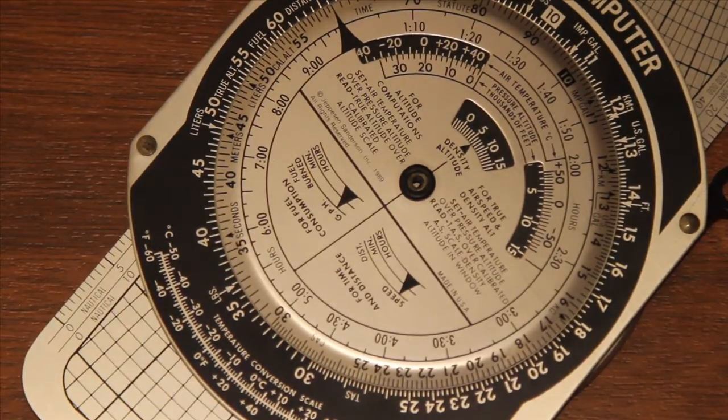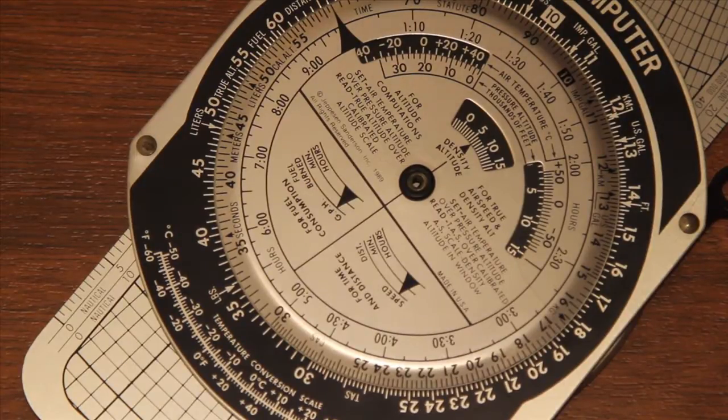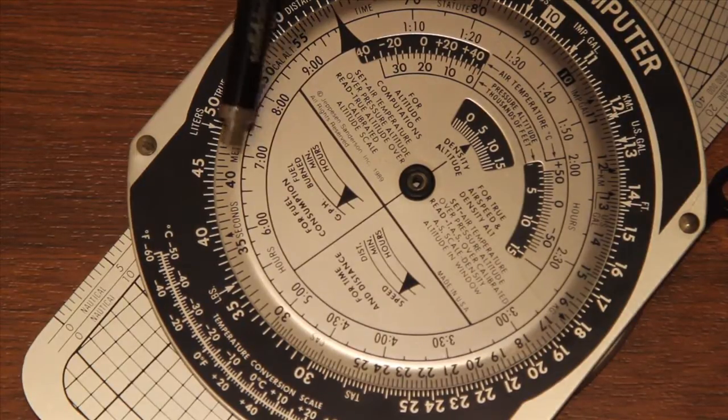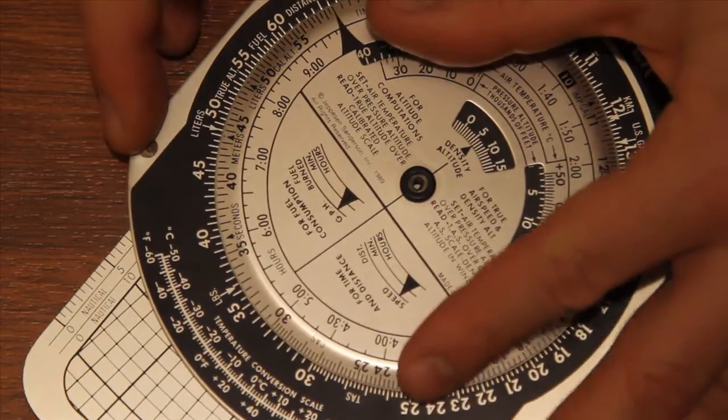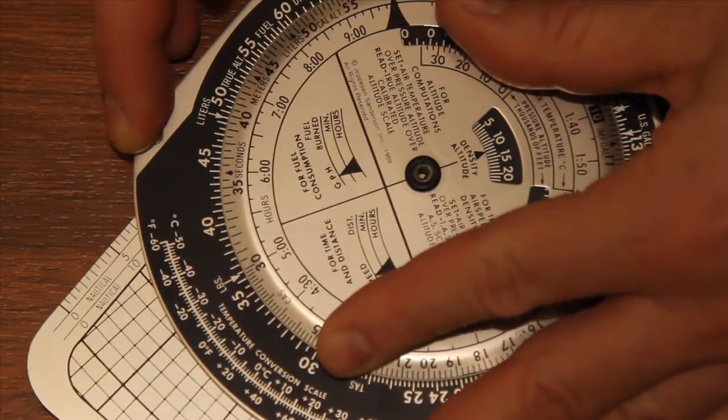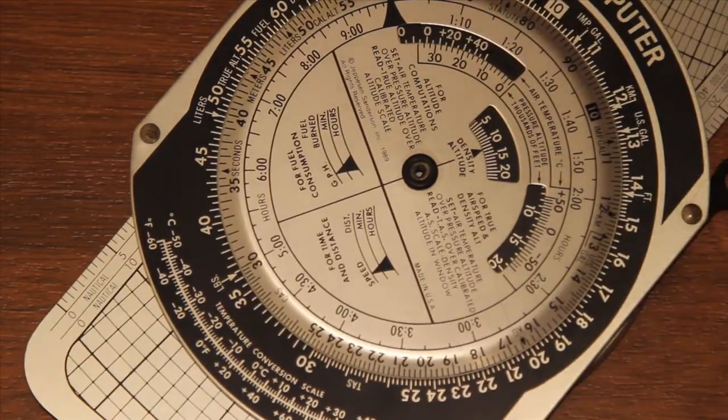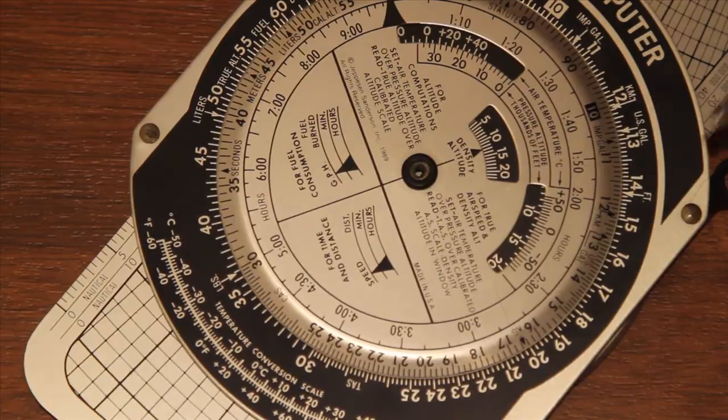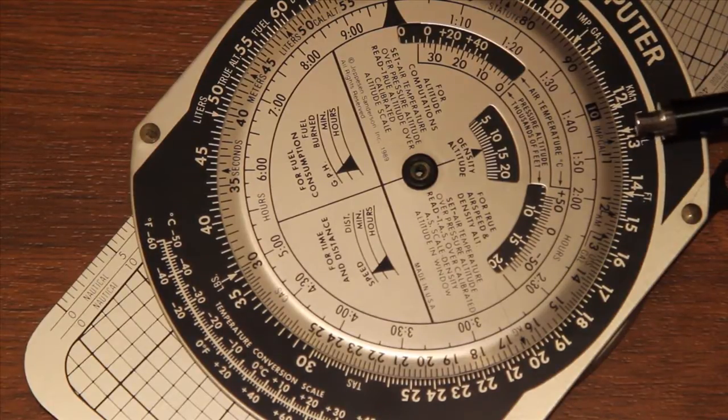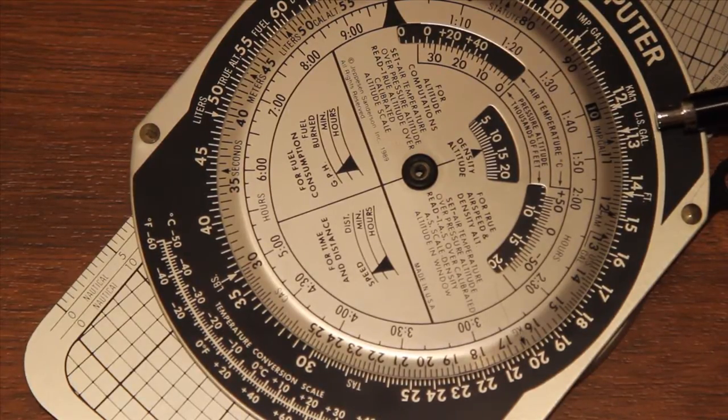So let's say you have 400 litres and you want to convert that to US gallons. You bring the 40 for 400 around to the litres mark here, so we bring that around there like that, and then you can read off your US gallons. So 40 litres is about 14 US gallons.